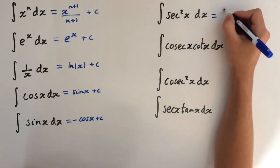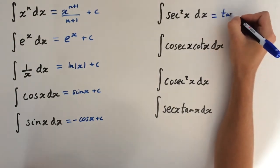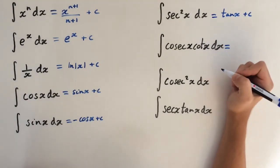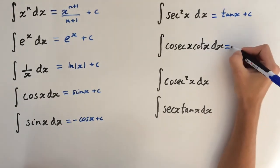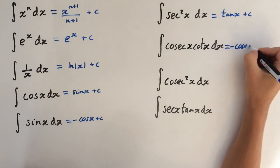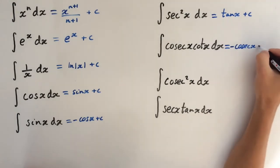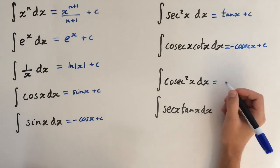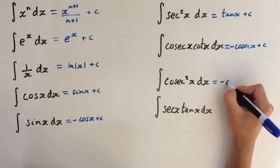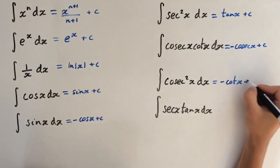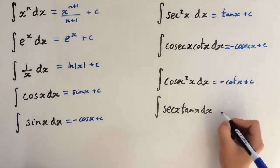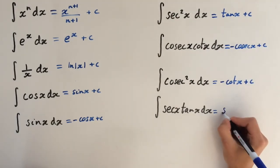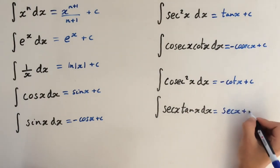The integral of csc of x cot of x is negative csc x plus c. The integral of csc squared of x is negative cot of x plus c. And finally, the integral of sec x tan x is just sec x plus c.